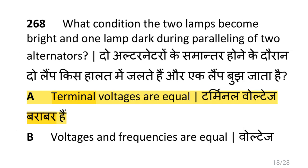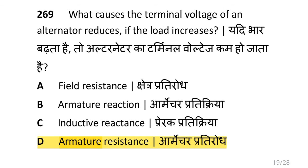What condition causes two lamps to become bright and one lamp dark during paralleling of two alternators, i.e. voltage and frequencies are equal? What causes the terminal voltage of an alternator to reduce if the load increases, i.e. armature resistance?